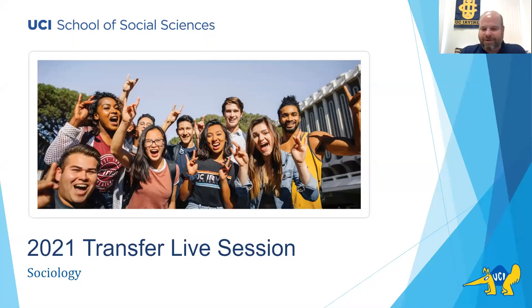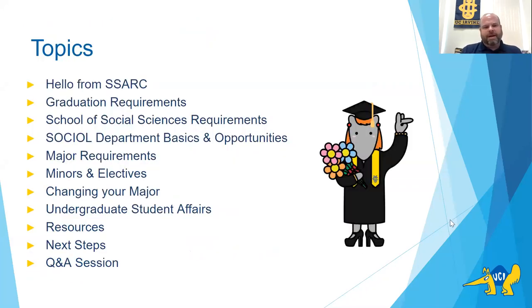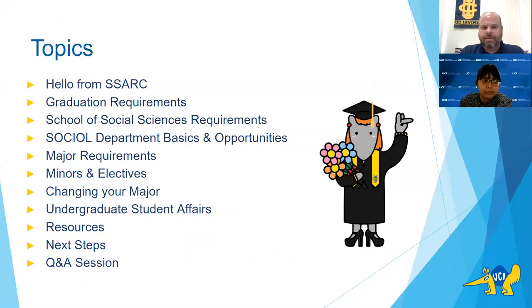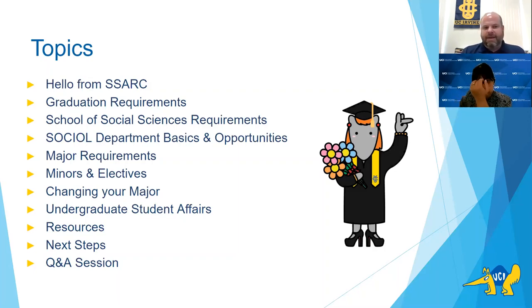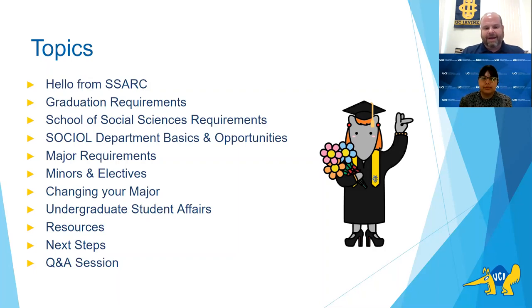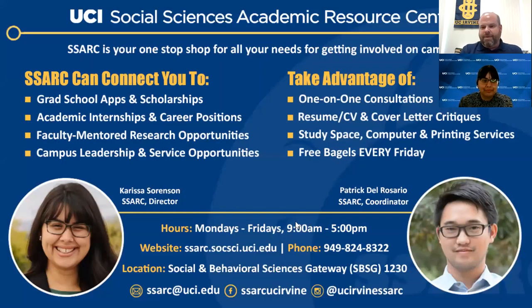We're going to be in the right spot for Sociology. For all the new transfer students coming in, welcome again. Some of the things we're going to be going over: I'm going to turn it over to Carissa Sorensen, who's going to talk about the opportunities available through our Social Sciences Academic Resource Center. Then we'll go into graduation requirements, school of social science requirements, the sociology department and their opportunities, major requirements, minors and electives, changing your major or double majoring, our undergraduate student affairs office, campus resources, upcoming deadlines, and then our live Q&A session. At this point, I'm going to turn it over to Carissa to talk about the SARC.